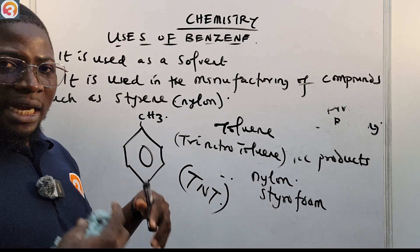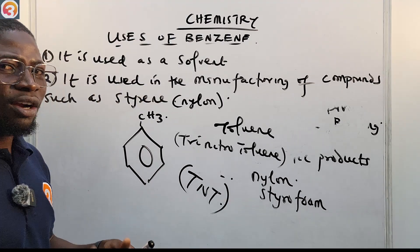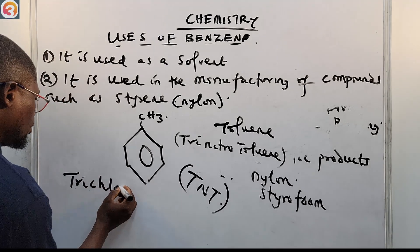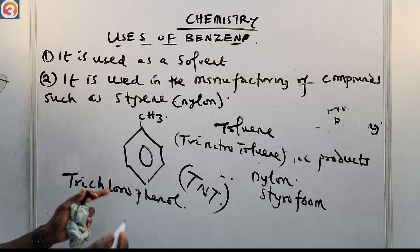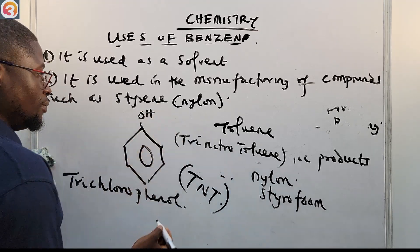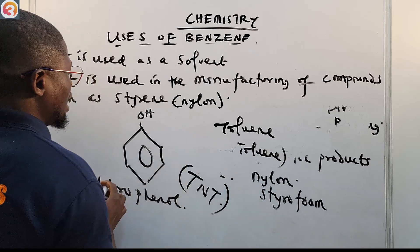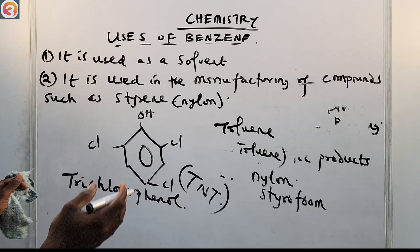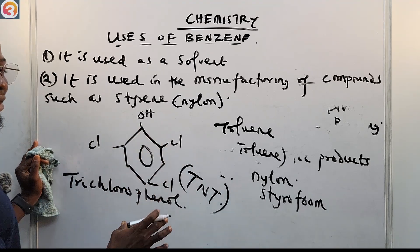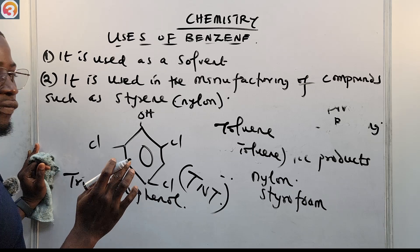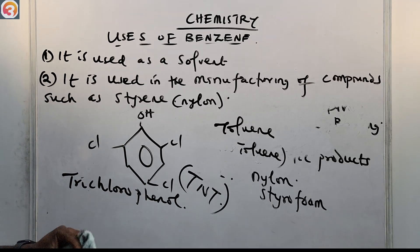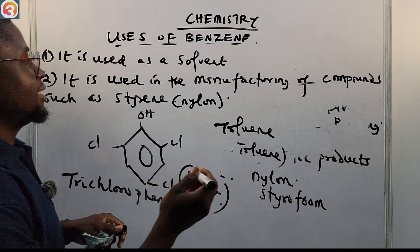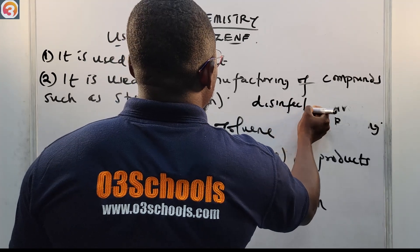Benzene is also used in the manufacture of trichlorophenol. Phenol is a benzene ring with an OH group; trichlorophenol has three chlorine groups attached to the benzene ring along with the OH group. Trichlorophenol is used as a disinfectant.